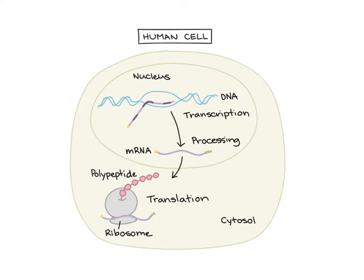Let's go back and remind ourselves how a protein is formed. A protein is made up of amino acids — that's what each one of these little pink circles represents. When you string these amino acids together, you get what we call a polypeptide. The polypeptide will then have to undergo folding before it can become a functional protein.